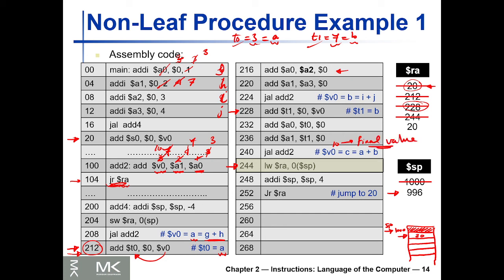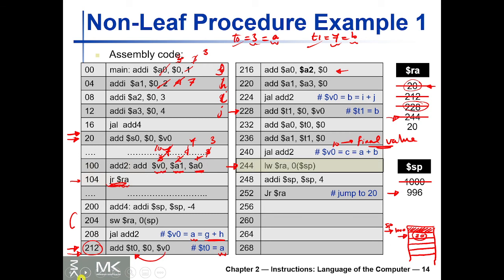At address 244, v0 contains 10, the final result. However, RA still holds 244 rather than 20 (the return to main). So we read back the original RA value from the stack into RA — now RA correctly holds 20. We restore the stack pointer to 1000, then jump via JR RA to line 20. At line 20 in main, we move v0 into s0. That's the complete example of a non-leaf procedure.